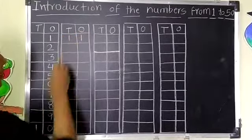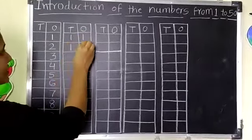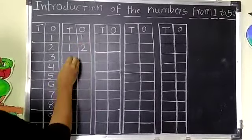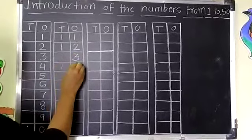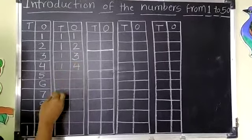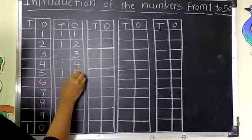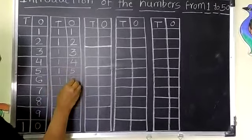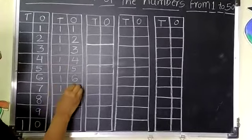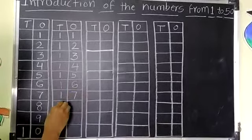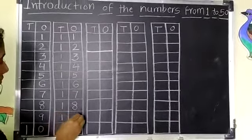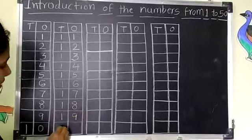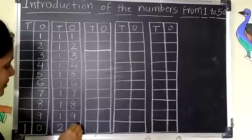1, 1, 11. 1, 2, 12. 1, 3, 13. 1, 4, 14. 1, 5, 15. 1, 6, 16. 1, 7, 17. 1, 8, 18. 1, 9, 19. 2, 0, 20.